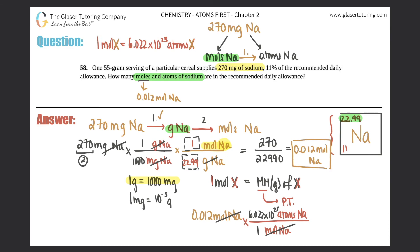So 0.012 times 6.022 times 10 to the 23rd. And we still need two sig figs. So 7.2 times 10 to the 21st atoms of sodium. Box that answer off.